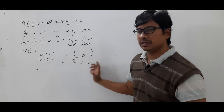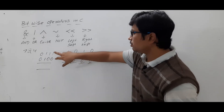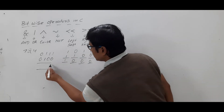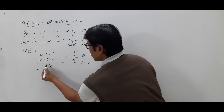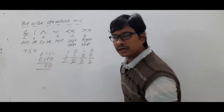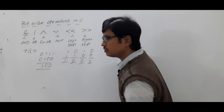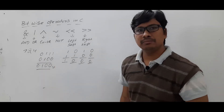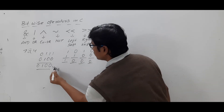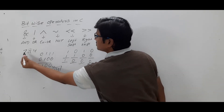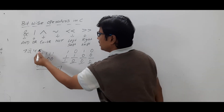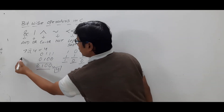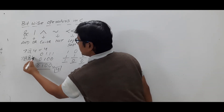So this is the basic principle of bitwise AND: both inputs must be 1 to get output 1, otherwise output is 0. Looking at each bit: 1 AND 0 = 0, 1 AND 0 = 0, 1 AND 1 = 1, 0 AND 0 = 0. Converting this binary result to decimal gives 4. So 7 bitwise AND 4 equals 4.